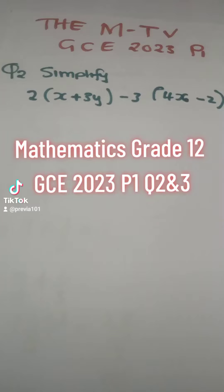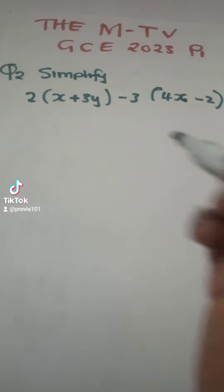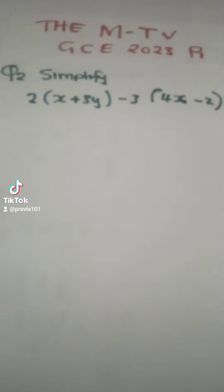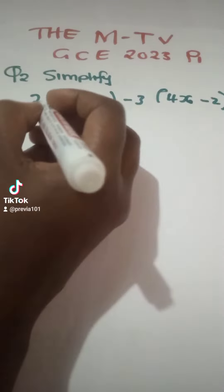Welcome to the MTV GCE 2023 Paper 1 Mathematics. The question is asking you to simplify this expression. First things first, get rid of the brackets by multiplying what is outside by everything in the brackets, so 2 times x is 2x.